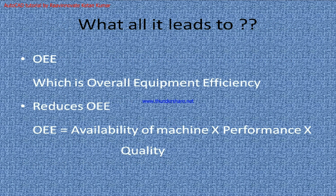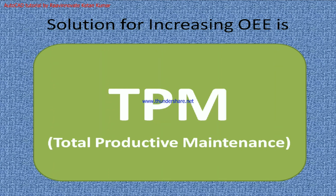If we are talking about many things like production increase, cost reduction, and good quality products, it leads to OEE — which is Overall Equipment Efficiency. We want to increase production, increase good quality, and minimize losses. All problems reduce OEE. OEE is the product of availability of the machine, performance of the machine, and quality of the product.